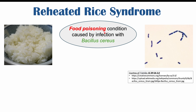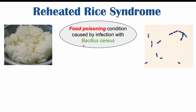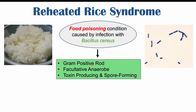Reheated rice syndrome is a food poisoning condition caused by infection with a bacteria known as Bacillus cereus. Bacillus cereus is a gram positive rod. If this is an actual photo of Bacillus cereus, you can see that they are purple in coloration — they've been gram stained, and when they're purple, they are gram positive and rod shaped. They're also what we would call facultatively anaerobic, meaning that they prefer to live in places that do have oxygen, but they can live in environments that don't have oxygen.